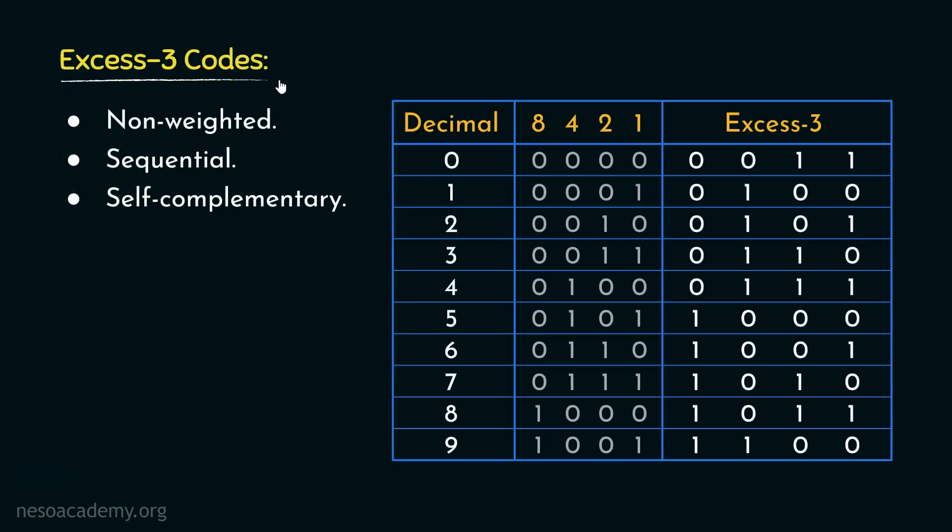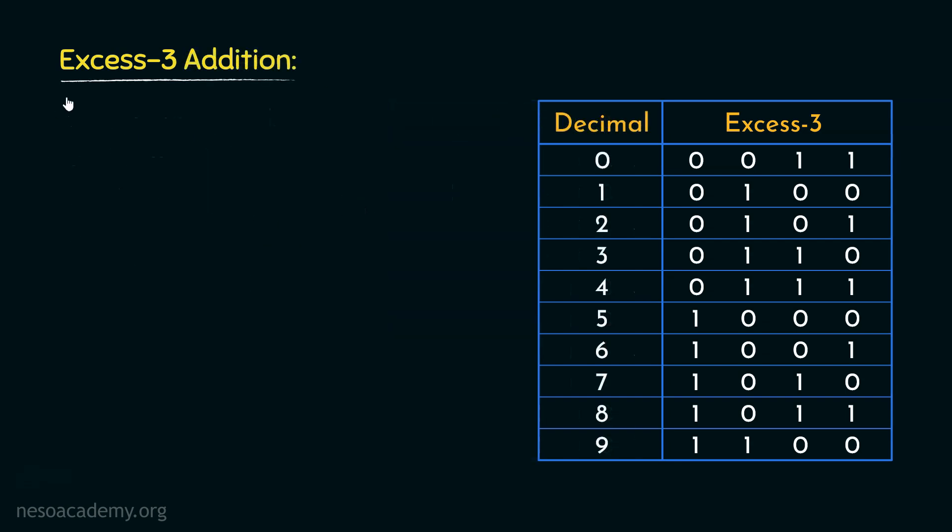Now, during the study of XS3 codes, we observed that these are non-weighted. However, from the weighted 8421 or BCD codes, we can generate the XS3. In that session, we also learned that XS3 codes are sequential. Basically, once 0 has been assigned to the XS3 value 0011 which in BCD is 3, thereafter all the subsequent patterns are actually sequential. Moreover, XS3 codes are self-complementary. Now, this much we have already seen, let's now proceed to XS3 addition.